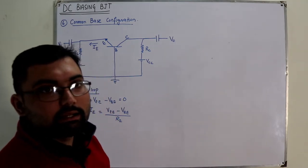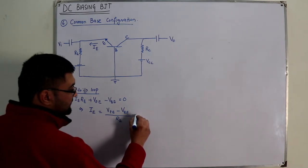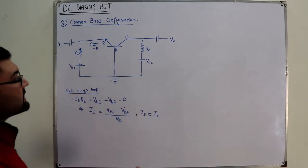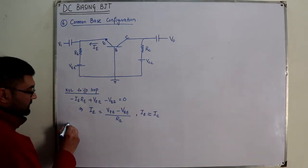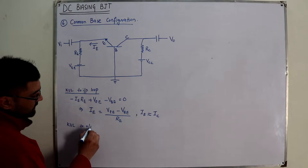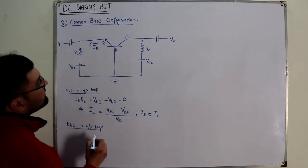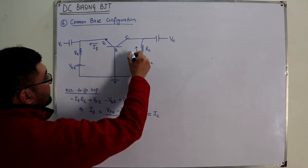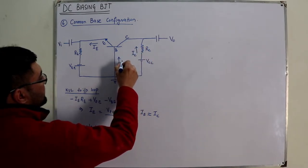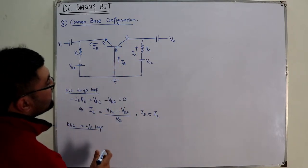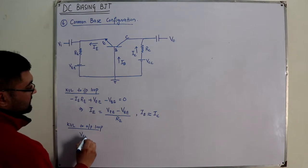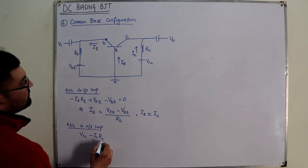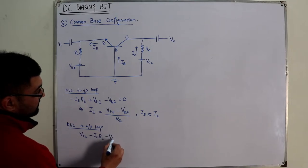You know that IE is approximately equal to IC, because IE = IC + IB and IB is very small. Applying KVL to the output loop: IC is the entering current. Going around: plus VCC minus IC·RC minus VCB = 0.